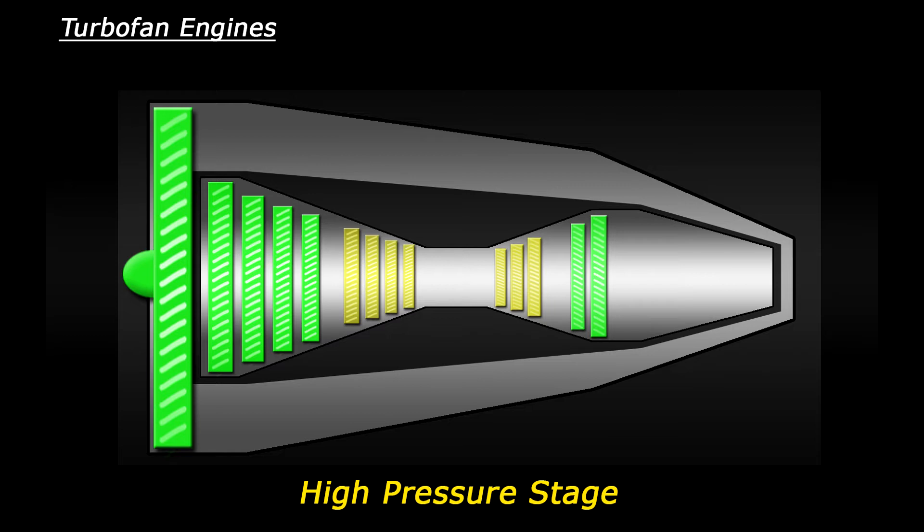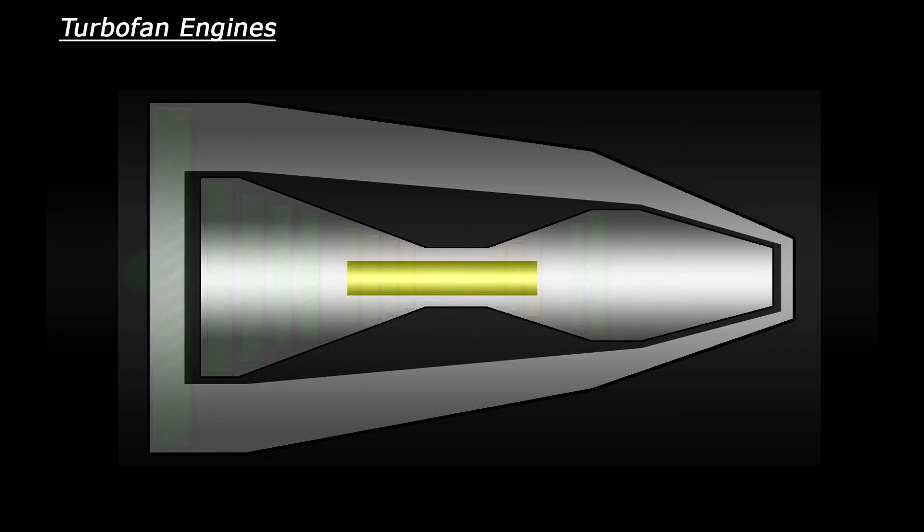Now all of these turbines and compressors are connected together by a shaft. However the high pressure stage has one shaft and the low pressure stage has a separate shaft and they spin at different speeds independently from each other.